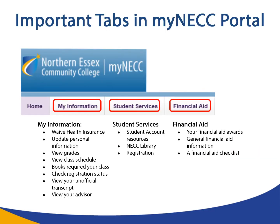Important tabs in the MyNECC portal. Under My Information, you can find links to WAVE Health Insurance, update personal information, view your grades, view your class schedule, books required for your class, check your registration status, view your unofficial transcripts, and find out who your advisor is.